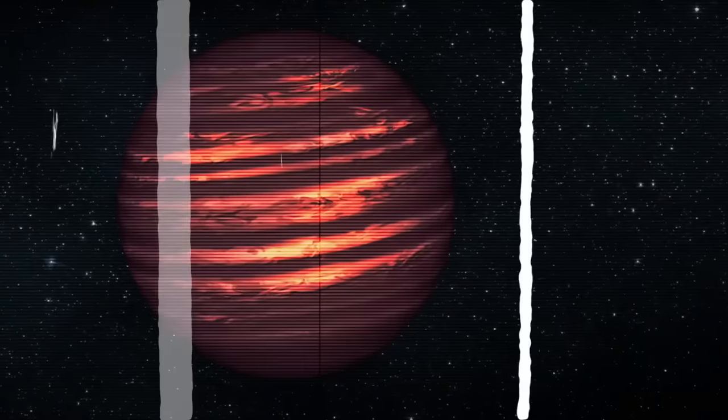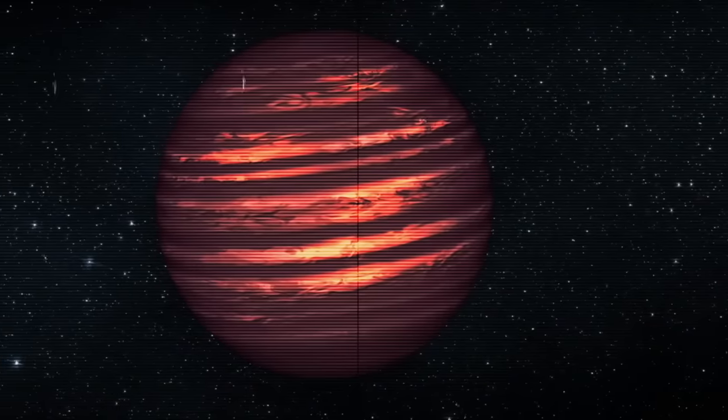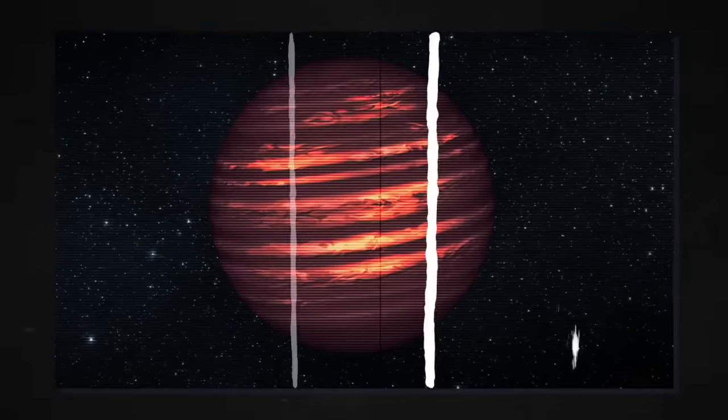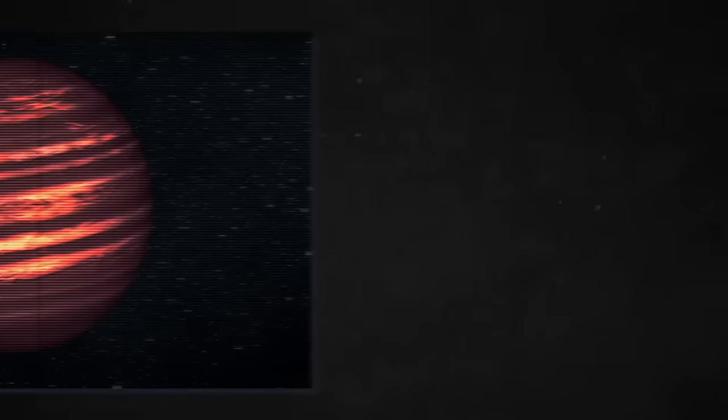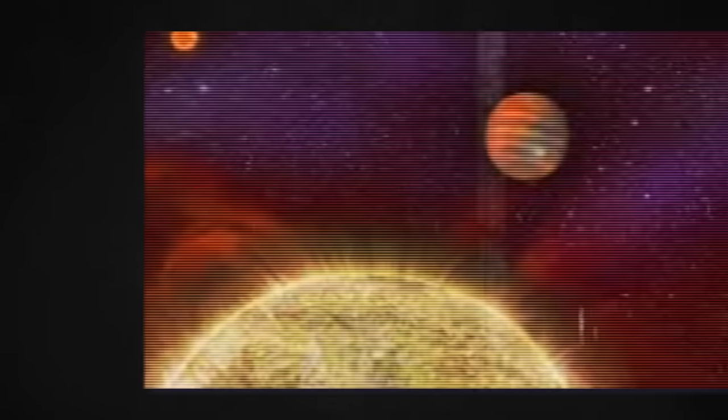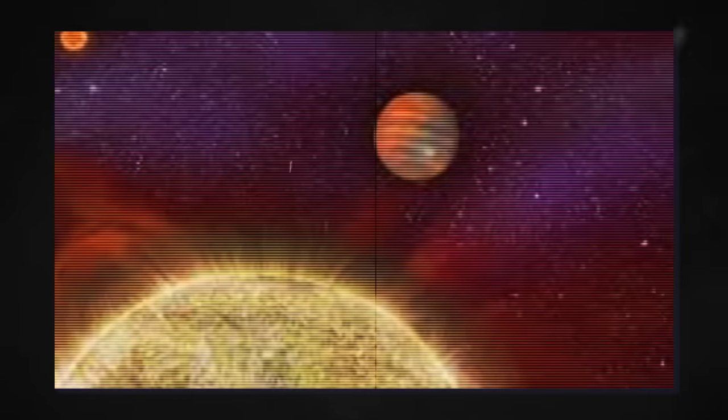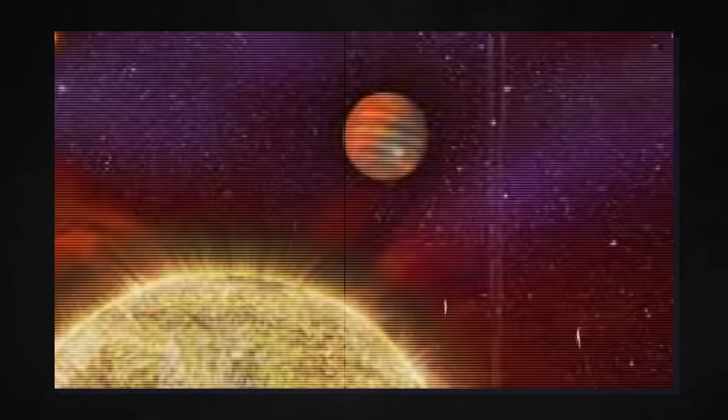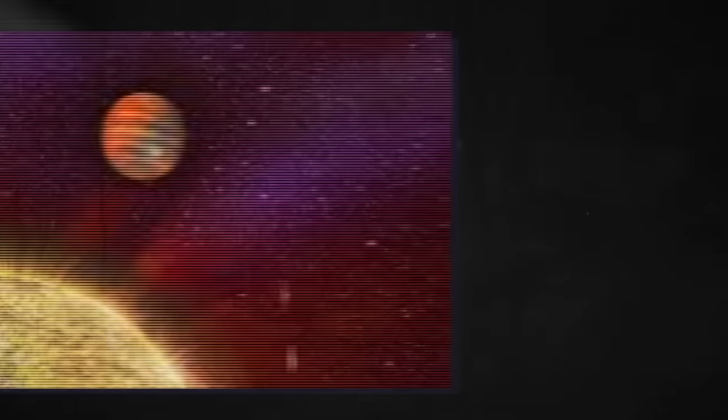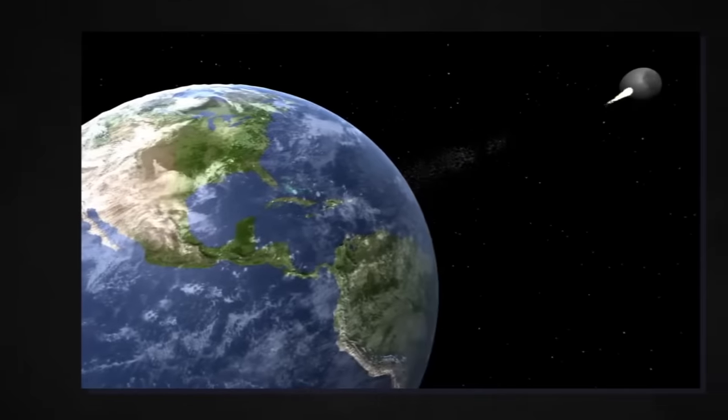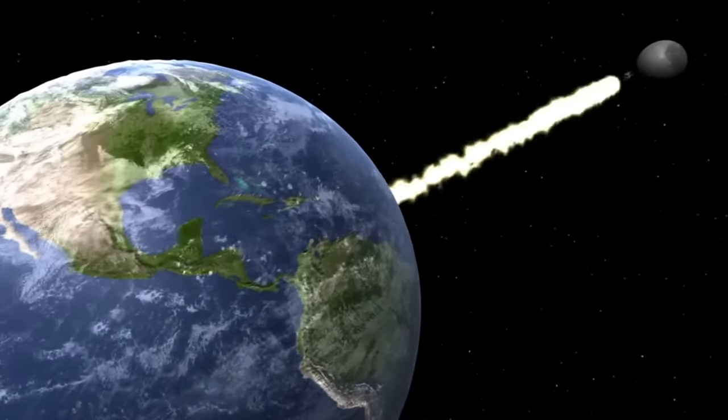And despite its classification as a brown dwarf, VHS 1256 b is relatively small, which hints at its youthful nature. The exoplanet gracefully orbits its parental stars, tracing an oval-shaped path that takes a staggering 17,000 years to complete, spanning a distance of 360 times the Earth's distance from the Sun.